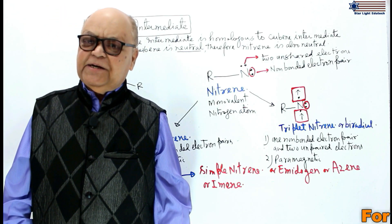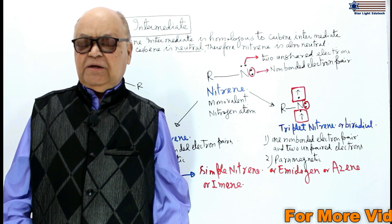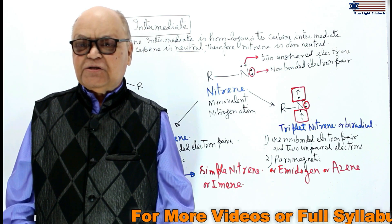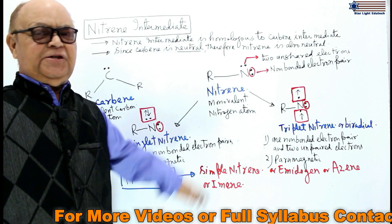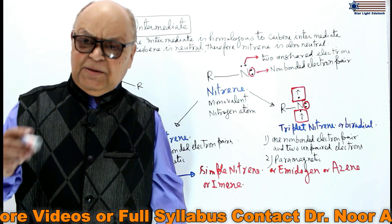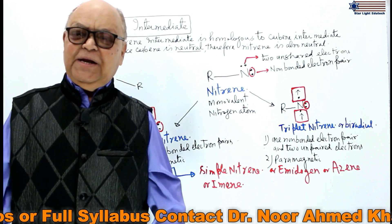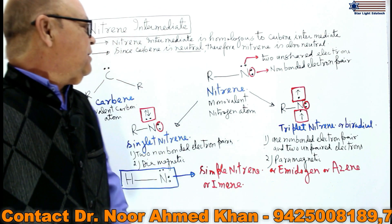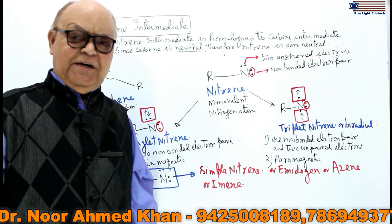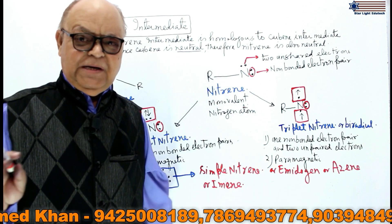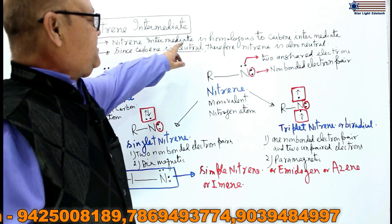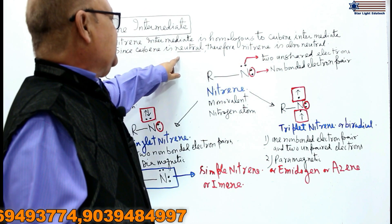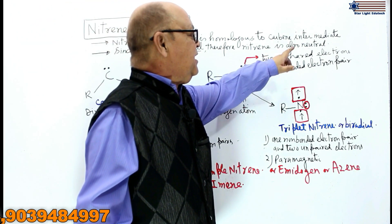After studying the carbene intermediate in detail, we are now starting another important reaction intermediate called the nitrene intermediate. Nitrene intermediate is similar or homologous to carbene intermediate, where carbon has been replaced by nitrogen. Since the carbene intermediate is electrically neutral, therefore nitrene intermediate is also electrically neutral.